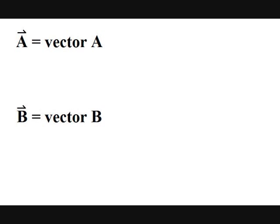Now let me introduce some notation. I will write a vector that is the quantity associated with a specific magnitude and direction as the identifying name with an arrow on top.